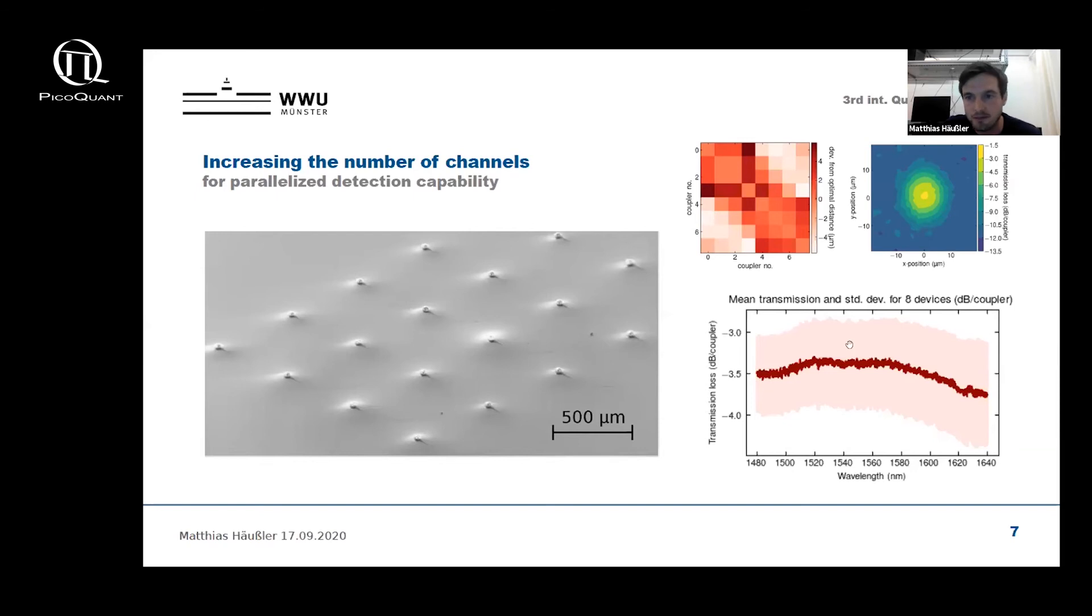In the last graph here we show a 3.5 dB mean transmission loss including standard deviation over a wavelength range from 1480 to 1640 nanometers, and we believe that with further optimization of this structure the mean transmission loss can be reduced to below 3 dB.